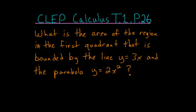What is the area of the region in the first quadrant that is bounded by the line y equals 3 times x and the parabola y equals 2 times x squared?